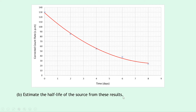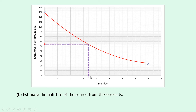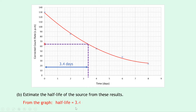Part B says to estimate the half-life of the source from these results. We identify the starting activity of 130, then halve that to 65 and put a red cross there. We draw a dashed line along to the curve, and then another dashed line down to the x-axis. Looking at the x-axis scale, that chunk of time is roughly 3.4 days. So from the graph, our half-life is equal to 3.4 days. Doing it once is sufficient since the question did not mention average.